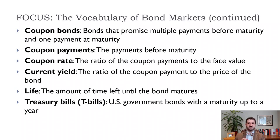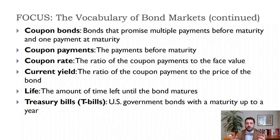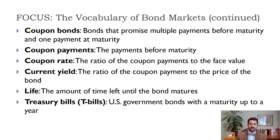Bond markets are often said to be more complicated than stock markets because of all the different types of bonds and the combinations and permutations of coupon payments, rates, and yields. There's a lot that goes into how much a bond is actually worth. The life of a bond is the amount of time left until it matures — so if it's a 10-year bond and it's been issued for three years, its life is seven years. That obviously affects how much you'd be willing to pay for it. Treasury Bills are U.S. government bonds with a maturity of up to one year.